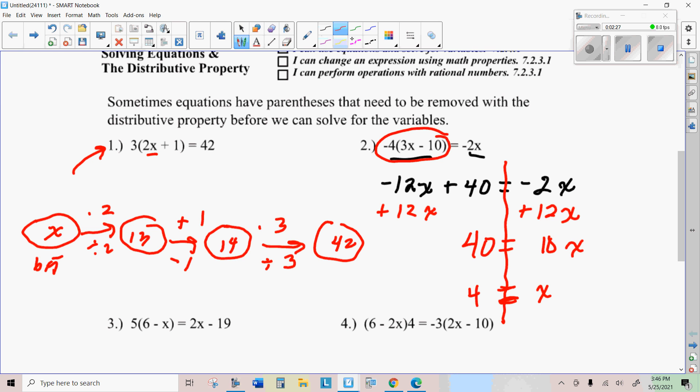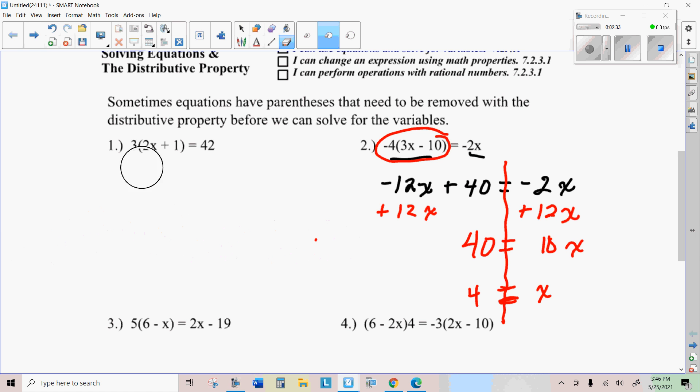I'm just showing you that it'll work that way. You could also get rid of the parentheses. So you would multiply this out, and you would, 3 times 2 is 6, 3 times 1 is 3.